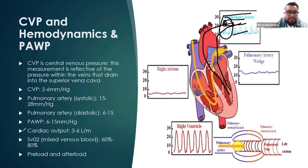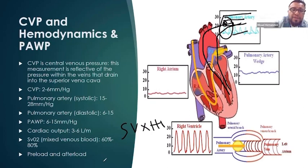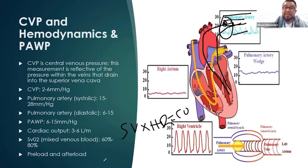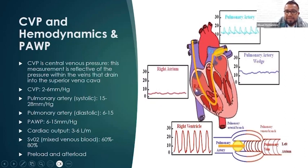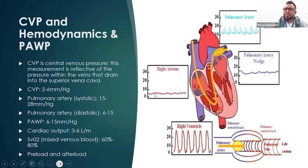One more thing — cardiac output is computed by multiplying stroke volume by heart rate. Stroke volume is the volume of blood that comes out of the left ventricle every pump, every stroke. All the graphs shown here demonstrate how pressure goes up and down with hemodynamic monitoring.